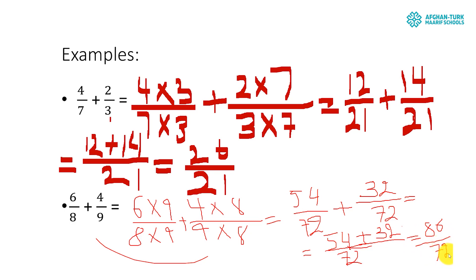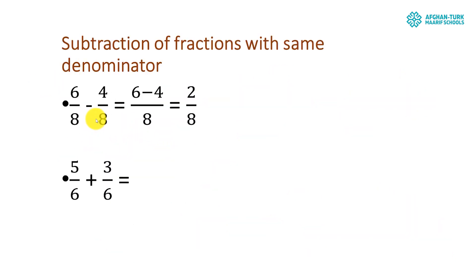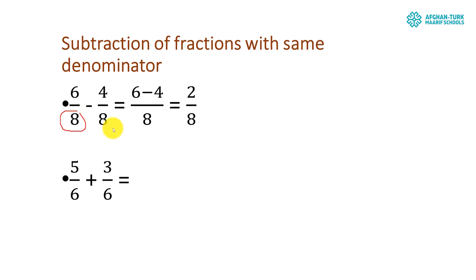Those were two more examples worked together. I hope you learned the addition of unlike fractions very well. Now we move to subtraction of fractions. The rules for both are the same — the only difference is the operation. The subtraction works the same way, with the same rules, and nothing changes for fractions with equal denominators.